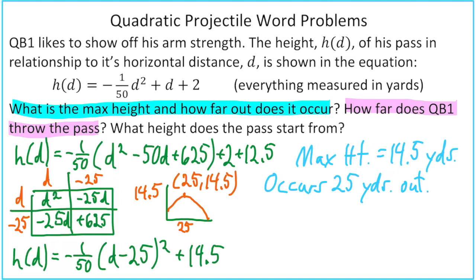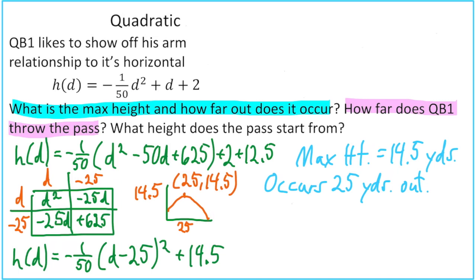Our next question is, how far does QB1 throw the pass? In other words, when does this pass hit the ground? And I'm actually starting to run out of space here. I'm going to have to clear up some space up top so we can do the rest. So hitting the ground means that we're going to actually find the x-intercepts. Or in this case, it would be the d-intercept, because it will hit the ground when the height is zero.